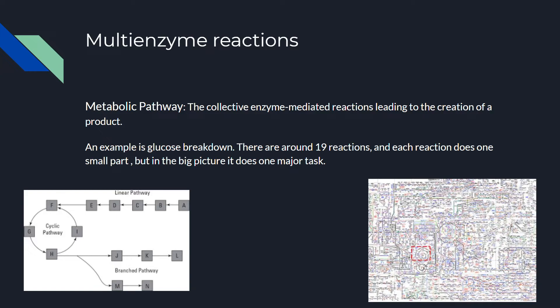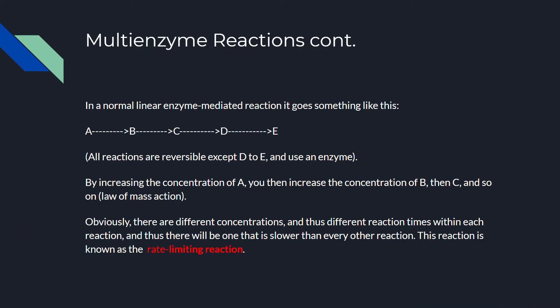Collectively, all metabolic pathways look something like the complex picture on the right — or maybe just a small fraction of it. In a normal linear enzyme-mediated reaction, all reactions are reversible except the one from D to E, which we'll explain later. By increasing the concentration of substrate in A to B, you then increase the concentration of B, then C, and so on. This is known as the law of mass action.